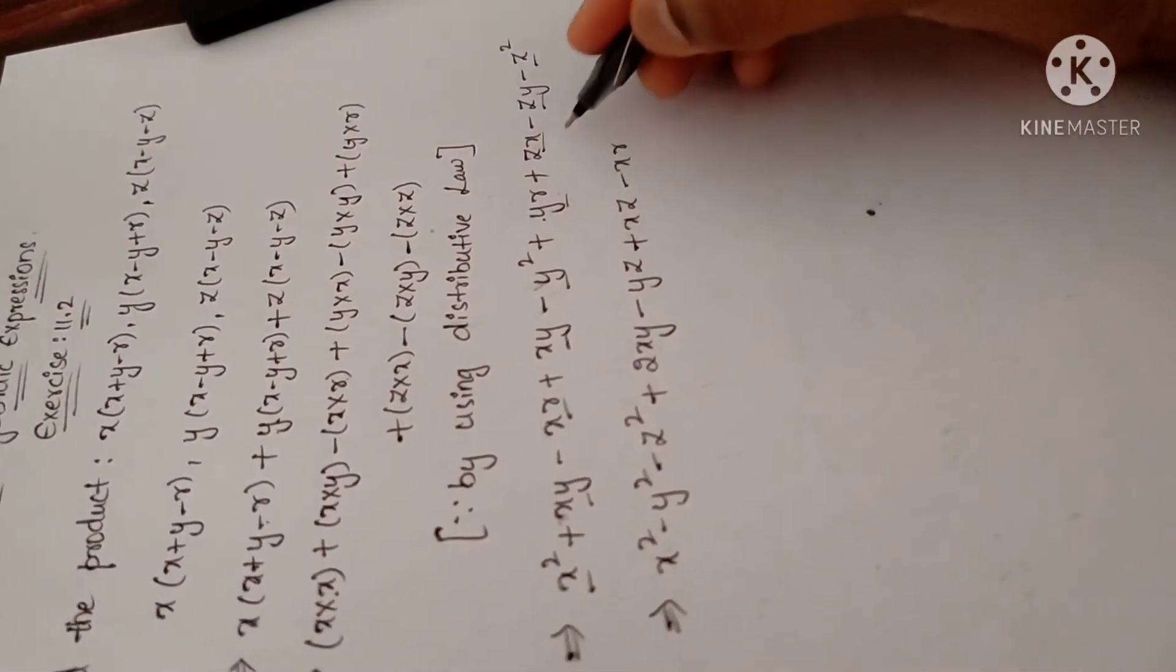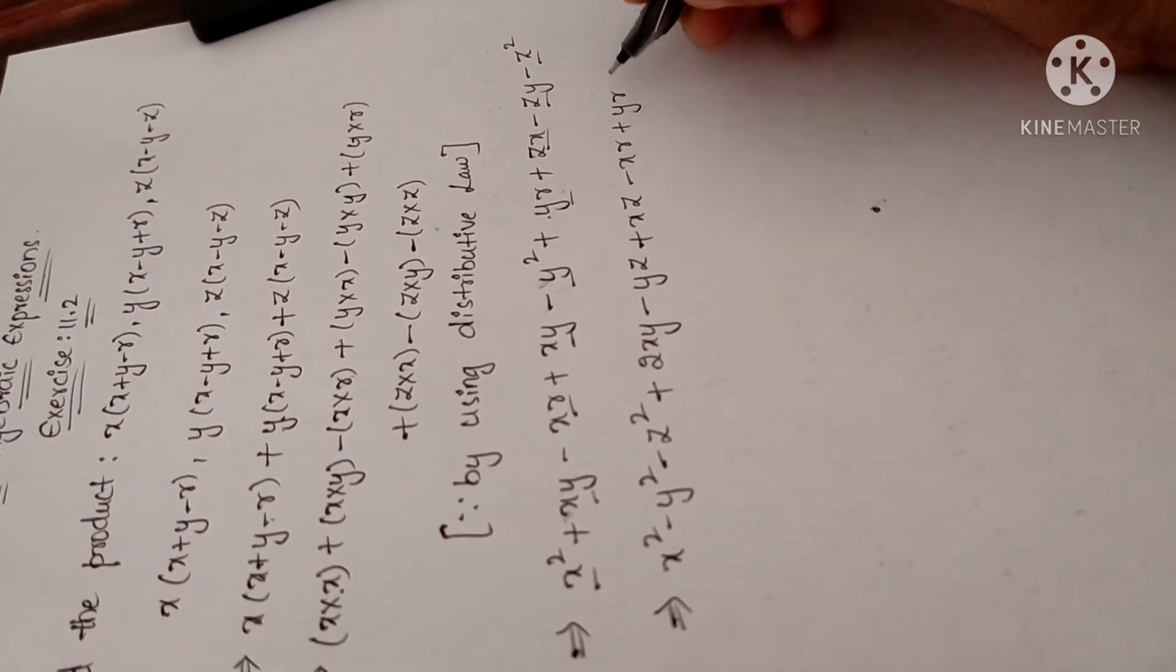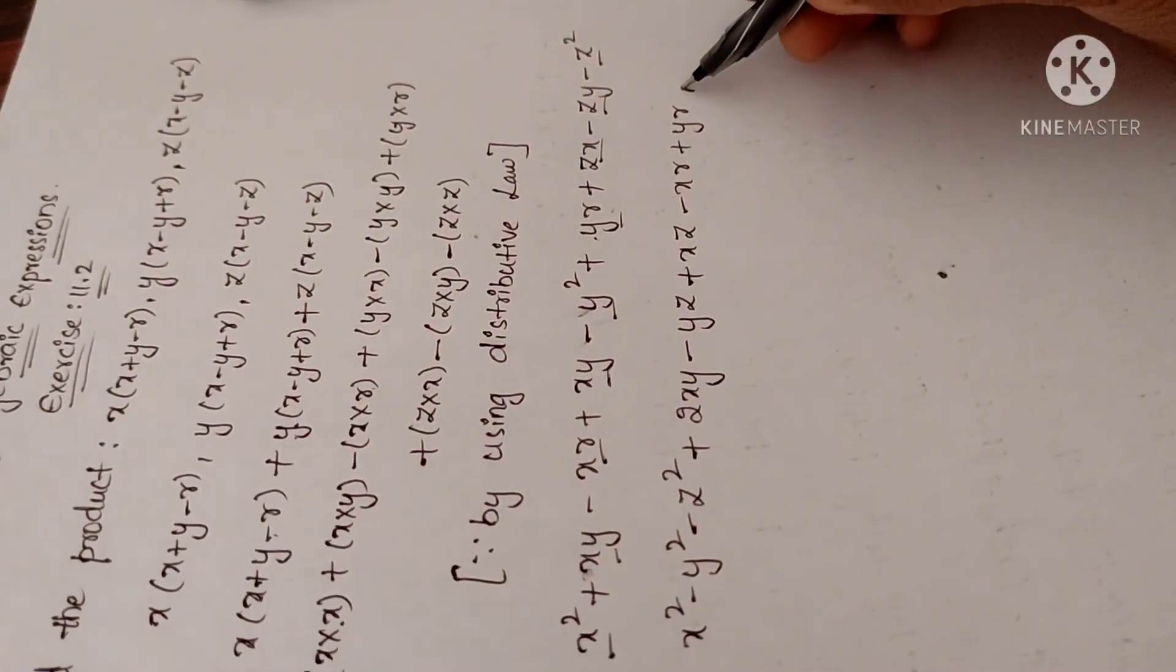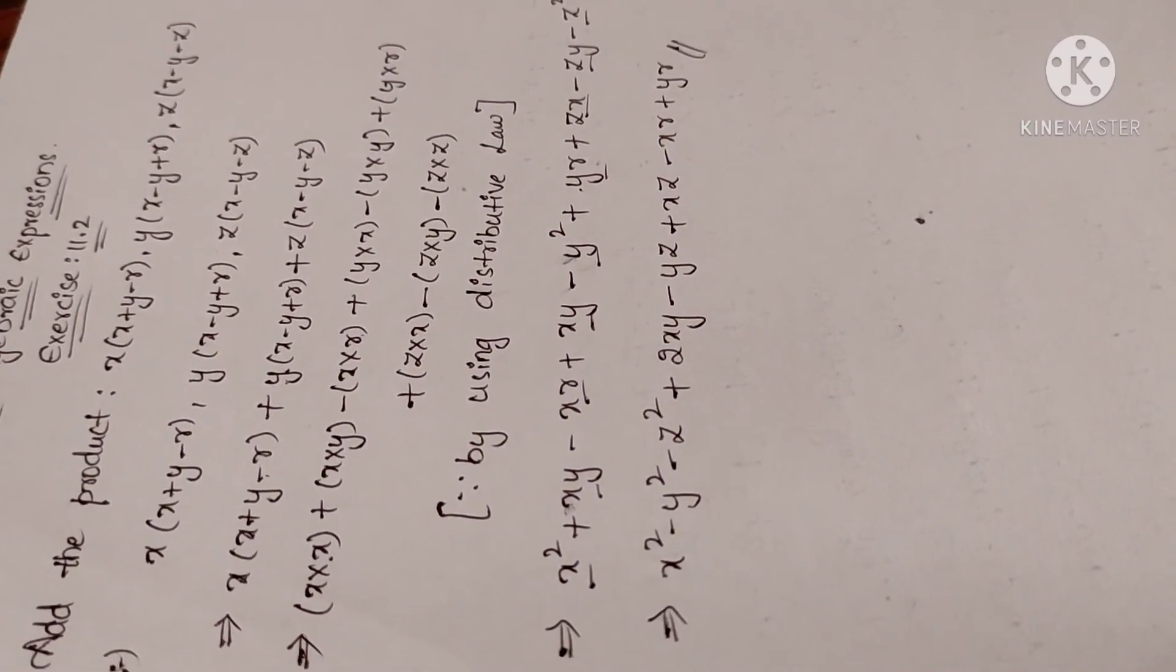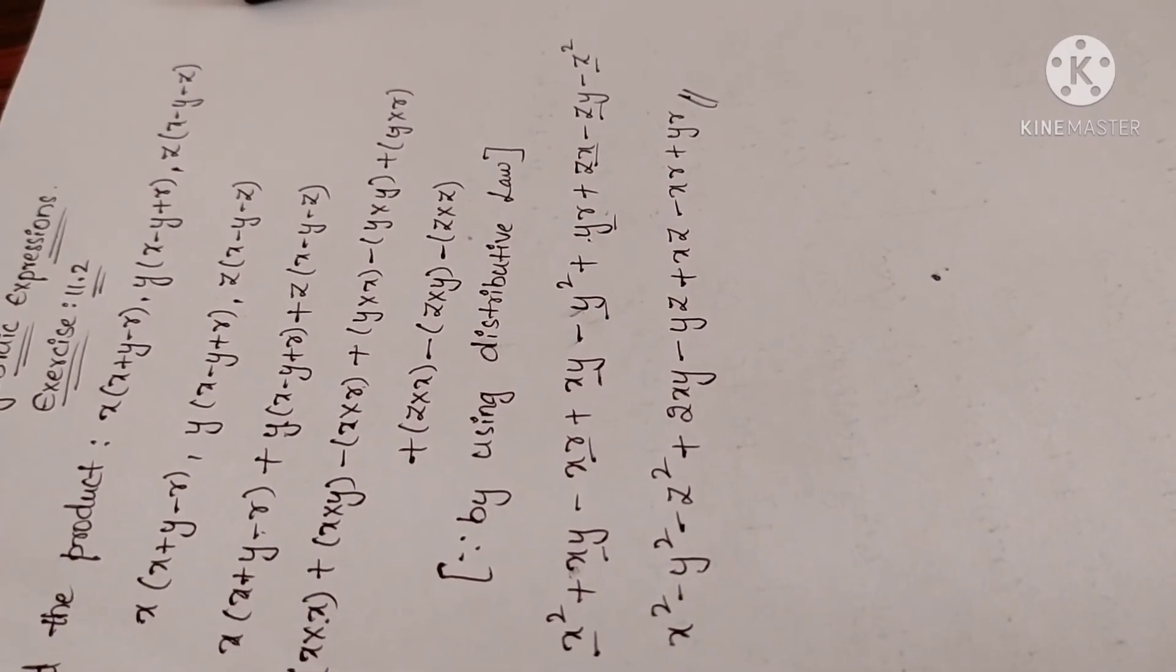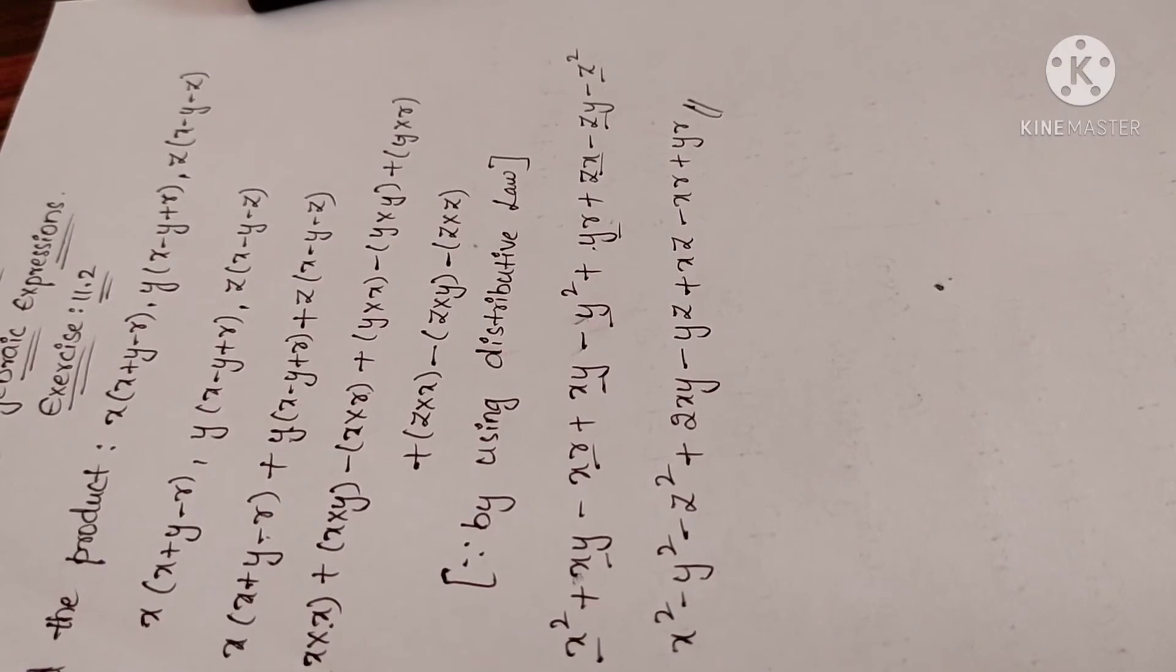So it is the solution for this problem: x squared minus y squared minus z squared plus 2xy minus yz plus xz minus xr plus yr is the solution for this problem.